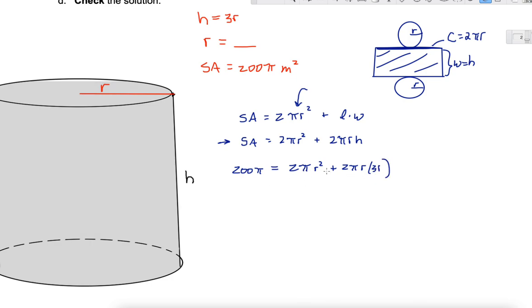I hope you guys see that we can divide out 2π to make this as simple as possible. So 100 on the left, got r squared, and here I got r times 3r, so that is 3r squared. r squared plus 3r squared is 4r squared equals 100.